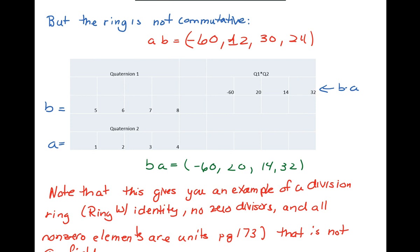Just to remind you, I have a times b above. And I just switched the a and the b. And I calculated b times a. And you see in green, b times a is (-60, 20, 14, 32). So a times b is not equal to b times a for the first random set of elements that I chose.